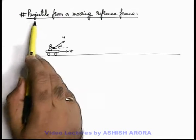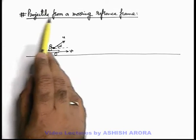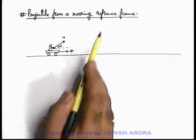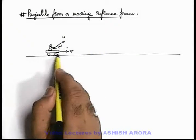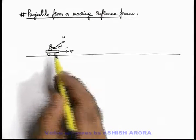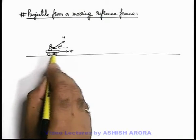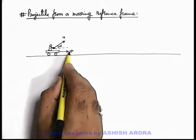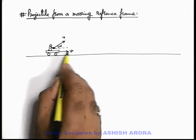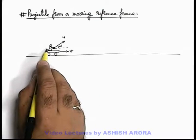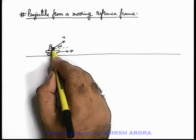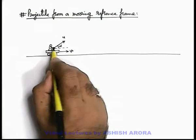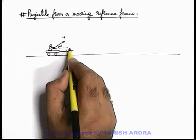Now we are going to discuss projectile from a moving reference frame. To analyze this, we consider a physical situation like a cart moving in horizontal direction on the ground with speed v. On the cart there is a boy who throws a ball with a speed u relative to the cart at an angle alpha from the horizontal.